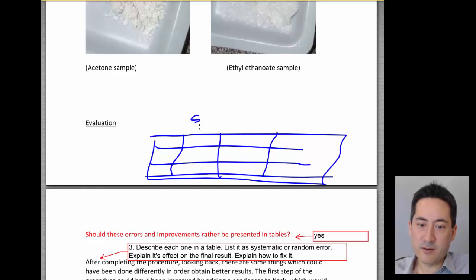So is it systematic or is it random? What is the error? How does the error affect the actual result? Does it make it go up or down? And how do you solve it? And a table is the only way.